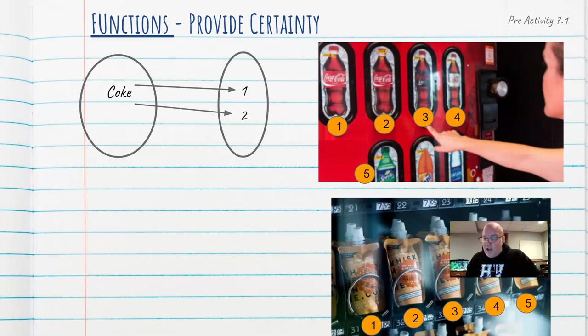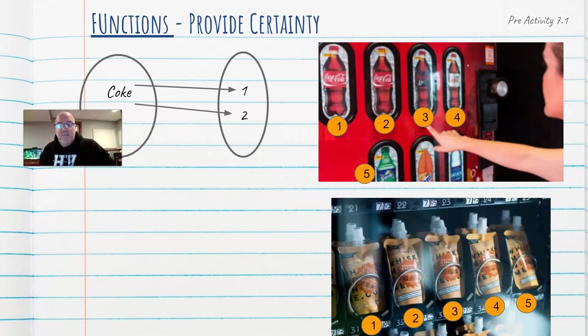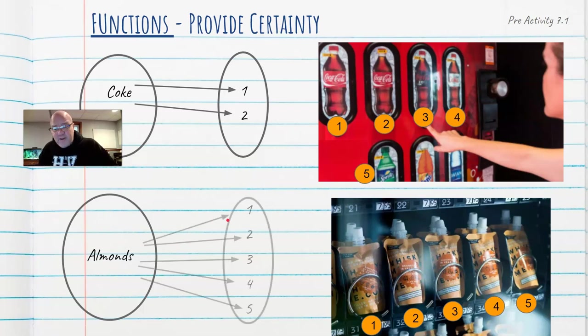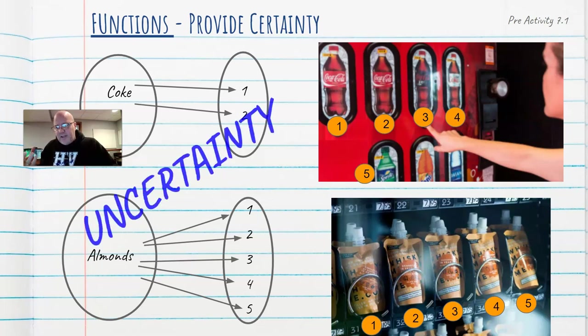In this example with the almonds, same thing. I'm walking away from the vending machine. I got a set of almonds in my hand. Well, do I know for sure what button was pushed to get those almonds? No, I don't. I could have pushed button one, two, three, four or five. I can't be certain. So you can see that some relationships, depending on how they're worded and how they're designed, some give us certainty. But in this case, we have uncertainty.